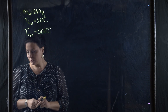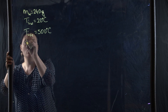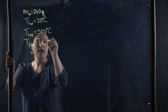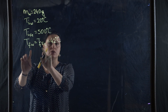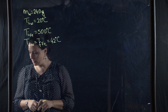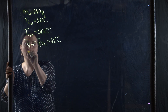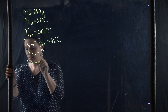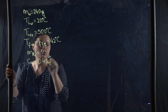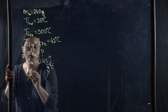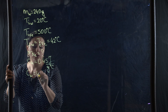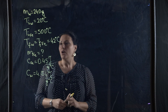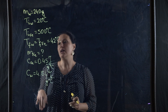When thermal equilibrium is reached, the system has a temperature of 42 degrees Celsius. The final temperature for both water and iron is 42 degrees Celsius — remember, the final temperatures will always be the same because the system reaches equilibrium. The specific heat for iron is 0.45 J/g°C and for water is 4.184 J/g°C.